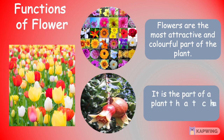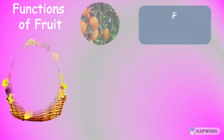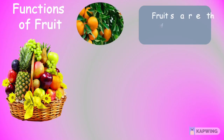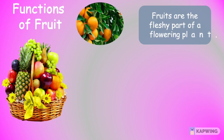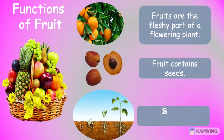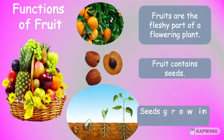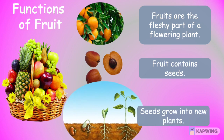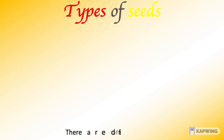Now we have flowers. Flowers are the most attractive and colorful part of the plant. It is the part of a plant that changes into fruit. Fruits are the fleshy part of a flowering plant, and fruit contains seeds. These seeds grow into new plants.